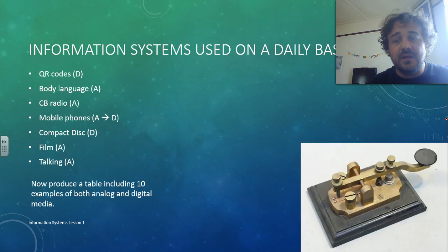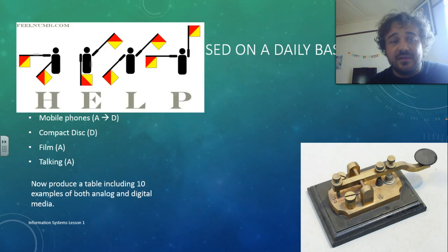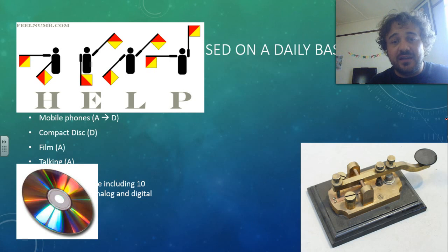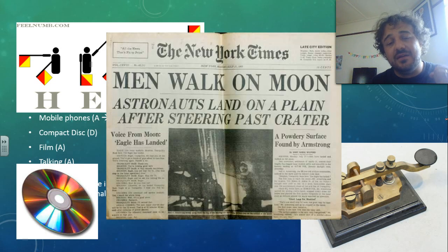Alright. So, here, we see a tapper key for morse code, and semaphore. Now, semaphore is a digital system, because it's broken up into discrete, there's no in-between. CD, also digital, and the newspaper. These are all information systems, and we use it, well, we don't use two of them on a daily basis.